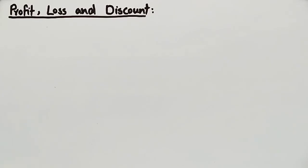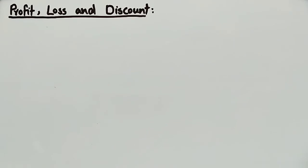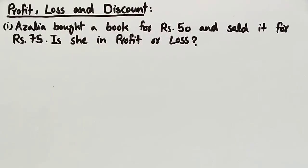In this video we will discuss profit, loss, and discount. Cash transaction is the most routine thing of a trader's life. He often purchases things from a wholesaler or a manufacturer after paying a price, which is called the cost price, and sells them to a customer at a price, which is called the sale price. We will discuss what a trader earns or loses with the help of two examples.